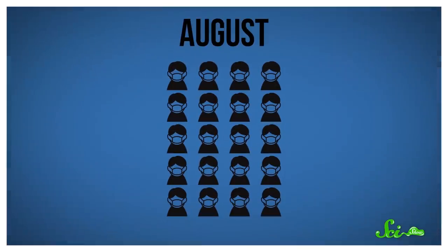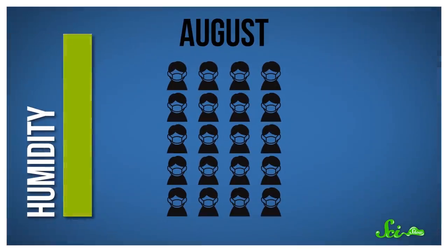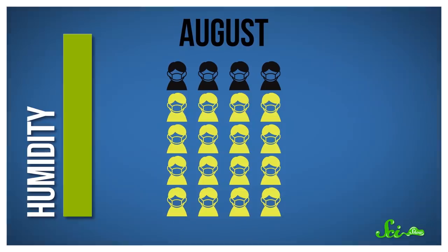In a 2010 paper, researchers started from actual New York City swine flu statistics to model how a flu pandemic could spread if different percentages of people were susceptible. They found that even in August, when humidity levels should in theory reduce transmission the most, the pandemic could still spread if 80% of people were susceptible to infection.